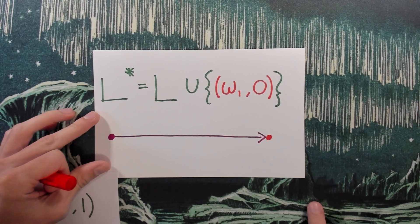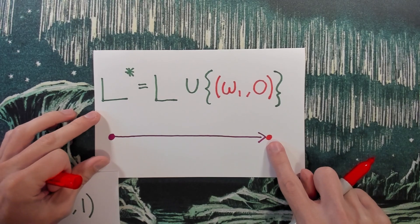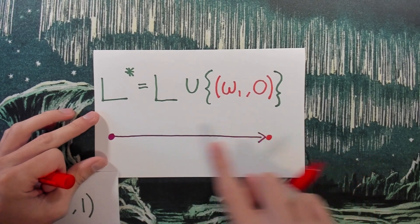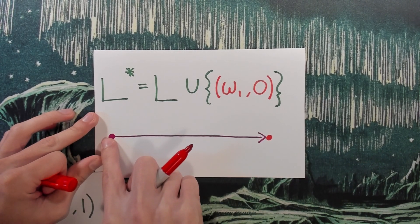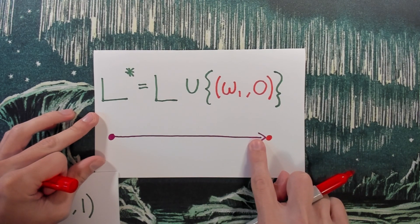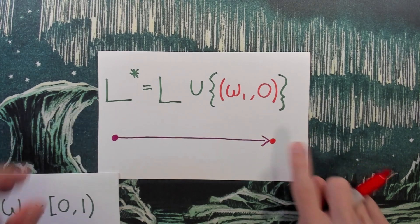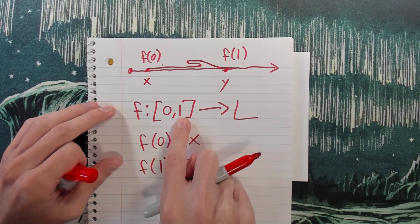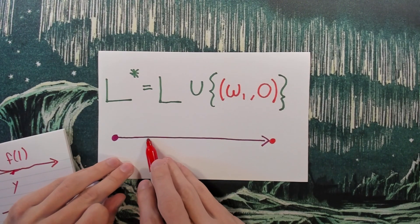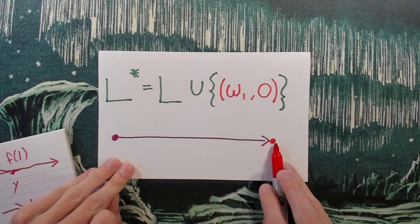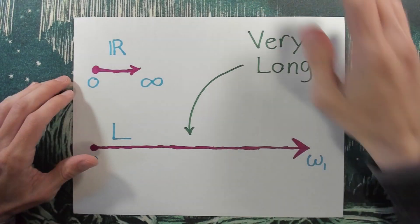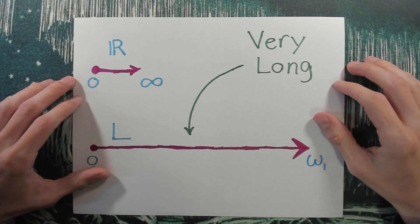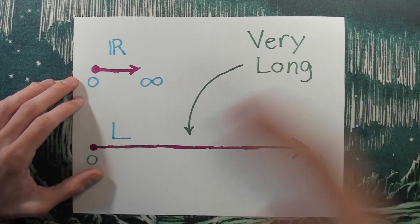But what happens if I just take this long line and add a single point at the end of it — via one-point compactification? Is this path connected? Well, no. There is no path from any point on the long line to this point we've added at the end, which means this interval [0,1] is just too small to map continuously in such a way that we start somewhere and end up at the very end. And that is a very long line. That is all — I hope you found it interesting, and if you have any questions I can try to answer them. Thanks for watching and take care.